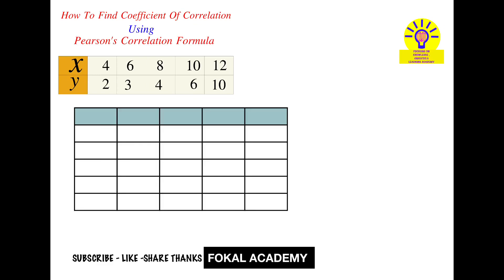In the first column take x values, second column y values, next x square values, next y square values, and finally the xy column. This last column is needed to calculate the coefficient of correlation using Pearson's correlation formula. Now fill in all the values — x values are 4, 6, 8, 10, 12.